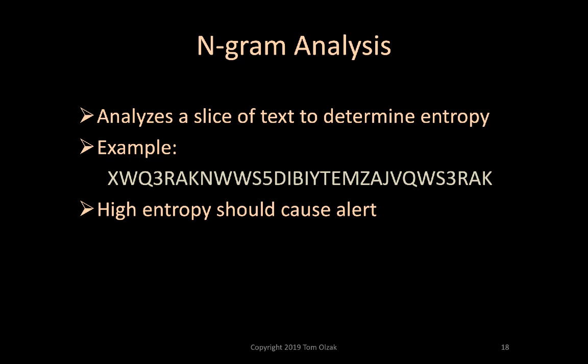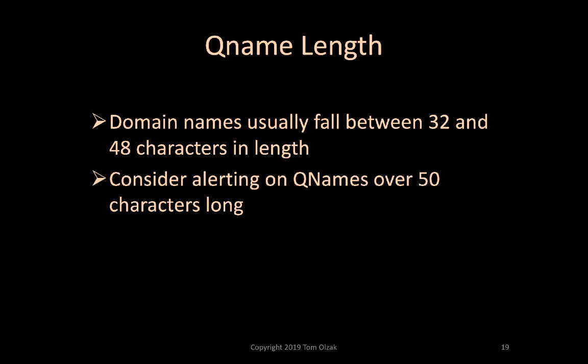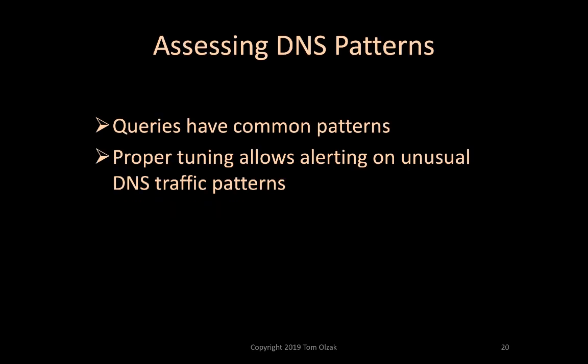Minimally, high entropy should cause an alert. According to Quicksprout, queue names fall into an expected length range of 32 to 48 characters. Consequently, organizations should consider alerting on queue names greater than 50 characters. Tuning will help arrive at the right length threshold. Each DNS query type has common patterns. If a query pattern moves too far from a baseline, the DNS defenses should send an alert. Not all environments are the same, so tuning is necessary to minimize false positives.